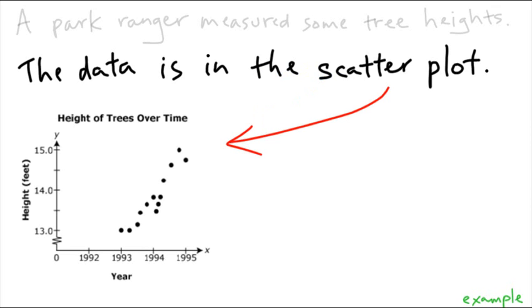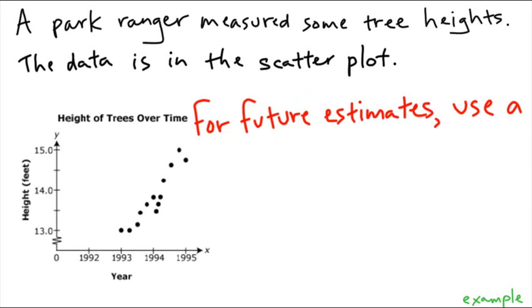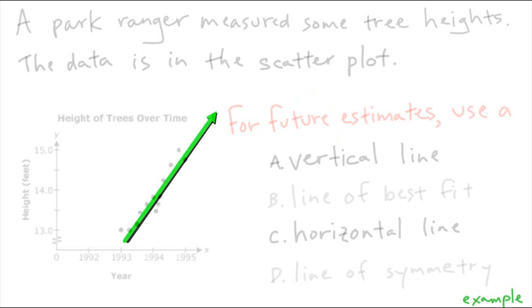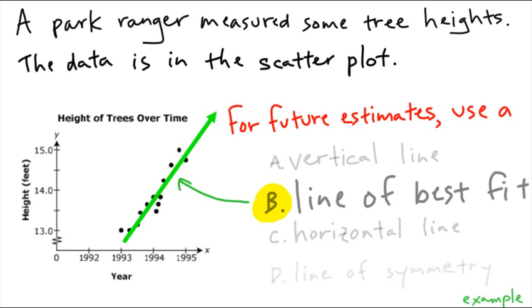The data is in the scatter plot shown, and if we were to do future estimates, should we use a vertical line, a line of best fit, a horizontal line, or a line of symmetry? As you can see, the data kind of takes a path like this green line, and it turns out what we need to use is a line of best fit.